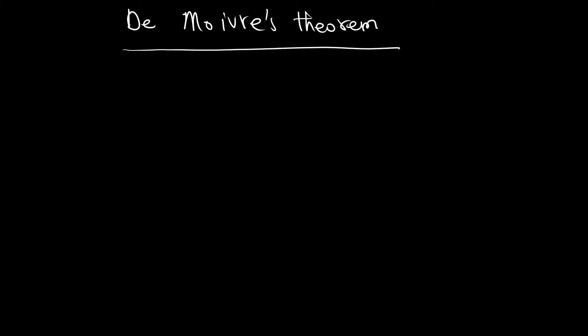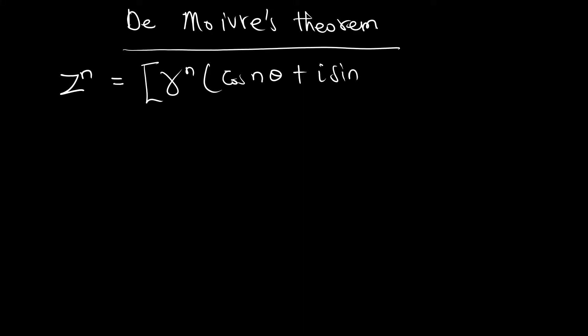When you have two complex numbers raised to large powers or powers which are a fraction, it is quite difficult to solve. However, with the use of De Moivre's theorem, it makes them quite simple. De Moivre's theorem is given by z to the power n equals r to the power n multiplied by cos(nθ) plus i sine(nθ).